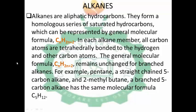In each alkane member, all carbon atoms are tetrahedrally bonded to hydrogen and other carbon atoms. The general molecular formula CnH2n+2 remains unchanged for branched alkanes. That means even though an alkane is branched, the general molecular formula will still be the same. For example, pentane, a straight 5-carbon alkane, and 2-methylbutane, a branched 5-carbon alkane, have the same molecular formula CnH2n+2. The total number of carbon atoms and hydrogen atoms in both compounds is the same.